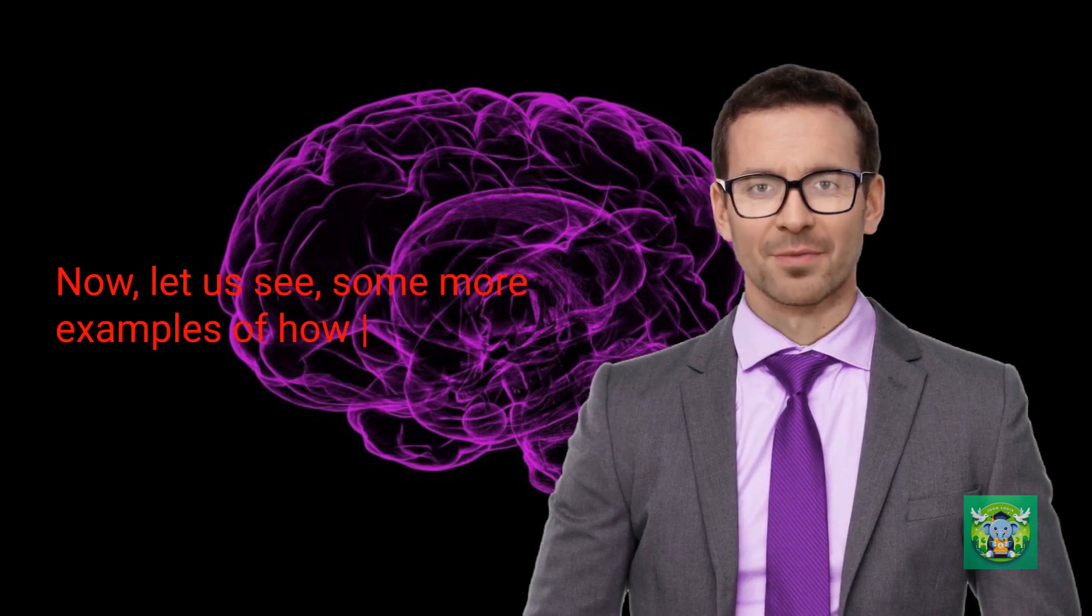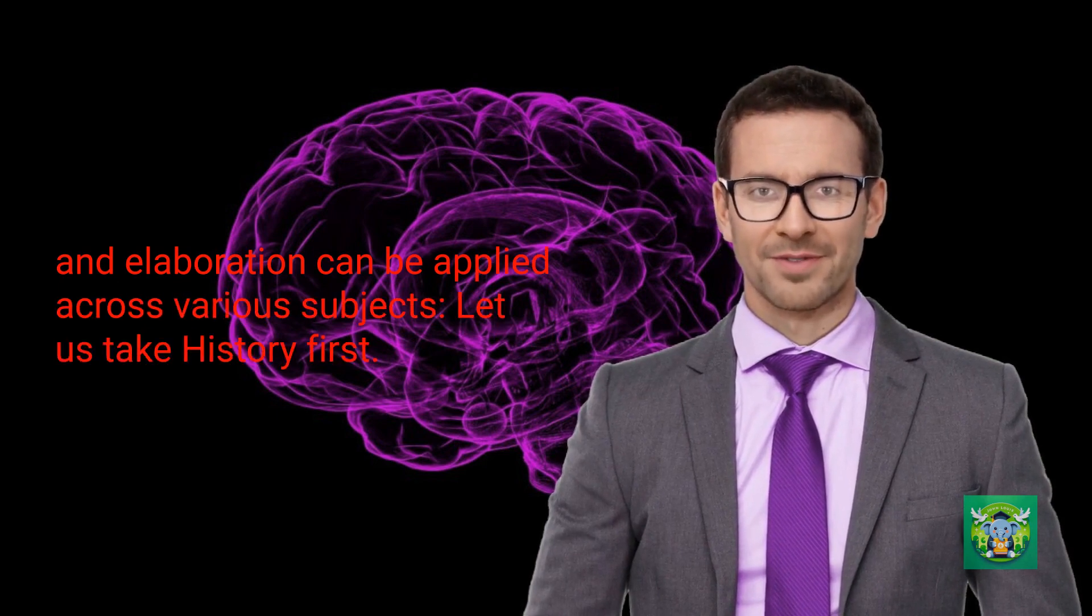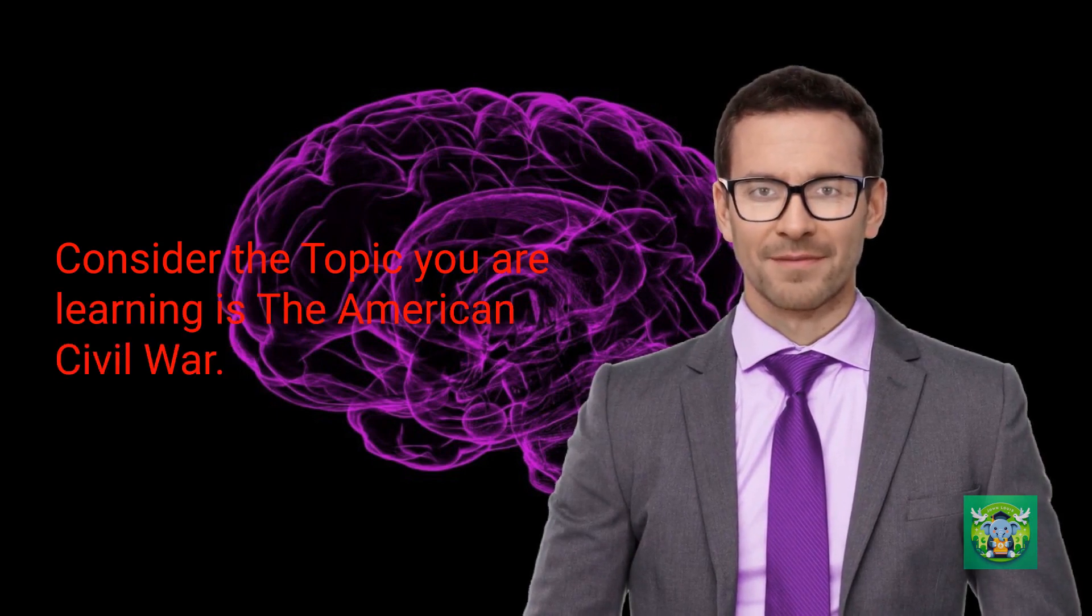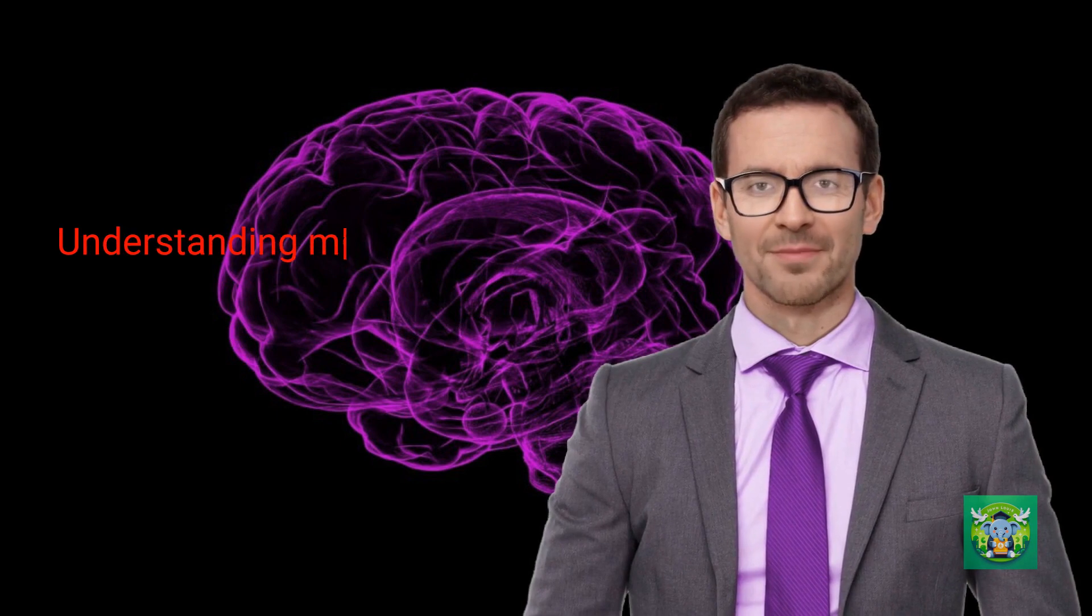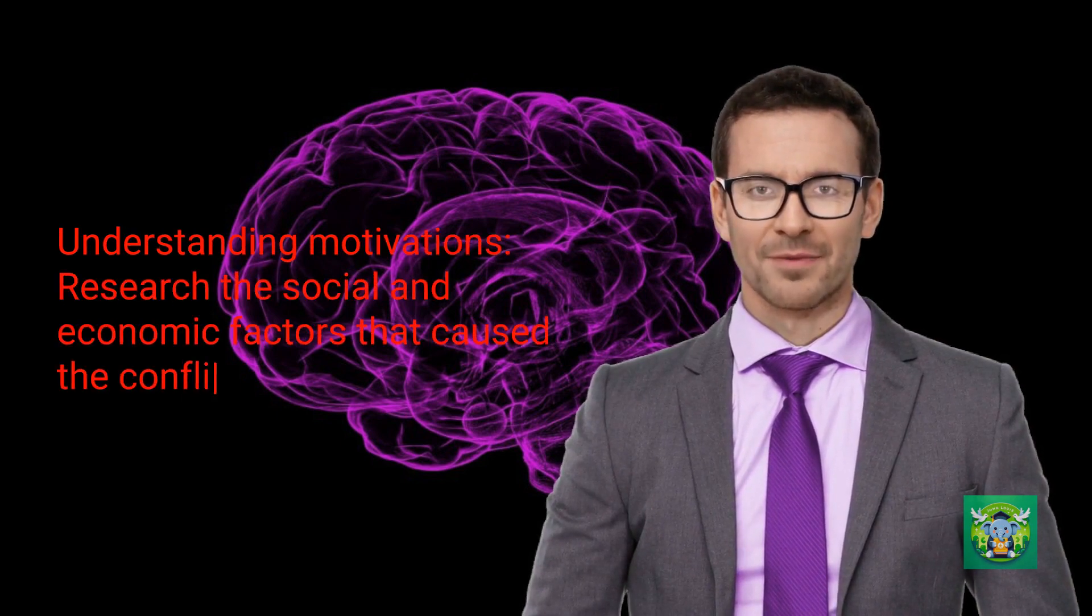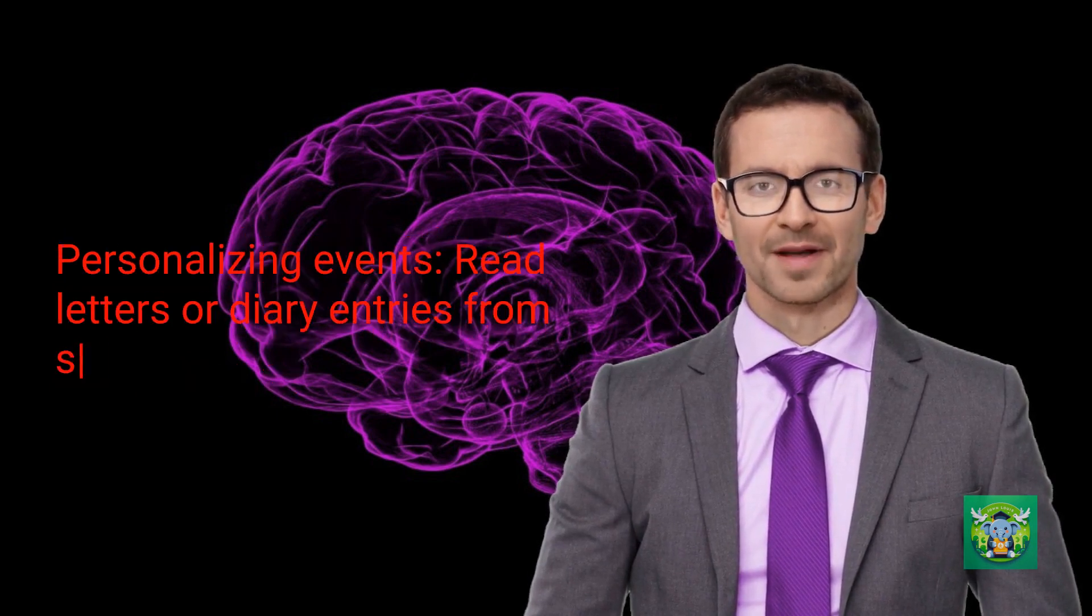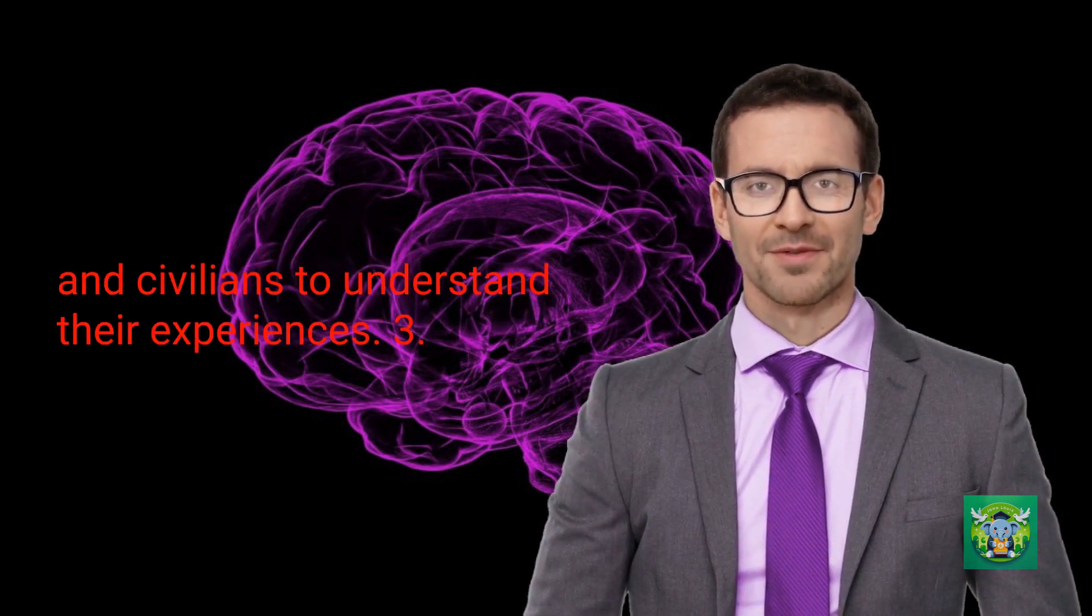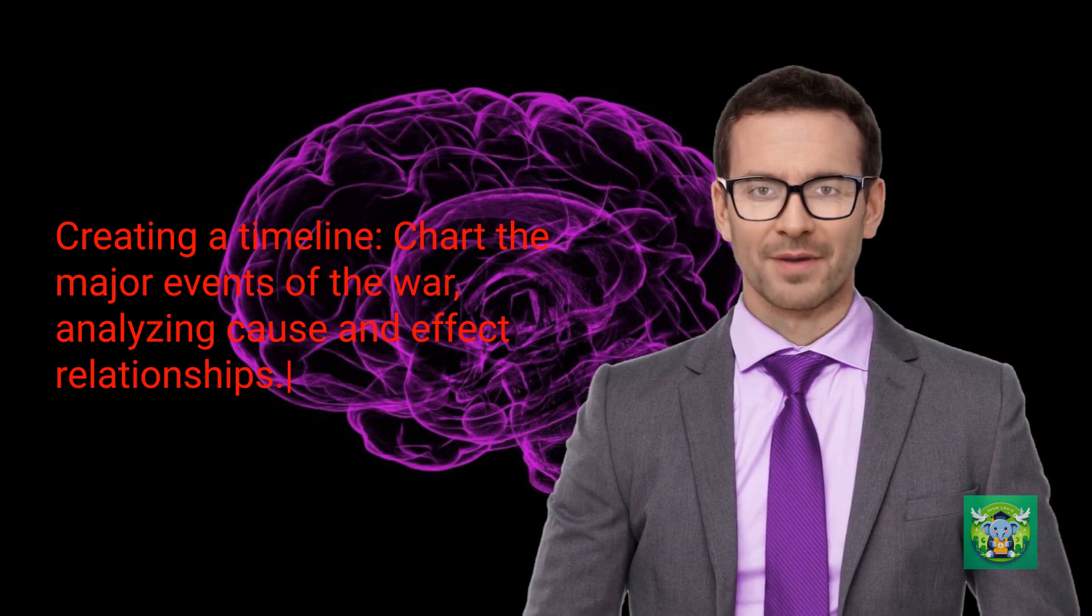Now, let us see some more examples of how processing and elaboration can be applied across various subjects. Let us take history first. Consider the topic you are learning is the American Civil War. Shallow processing is memorizing dates and names of battles. Deep processing with elaboration: one, understanding motivations—research the social and economic factors that caused the conflict. Two, personalizing events—read letters or diary entries from soldiers and civilians to understand their experiences. Three, creating a timeline—chart the major events of the war, analyzing cause and effect relationships.